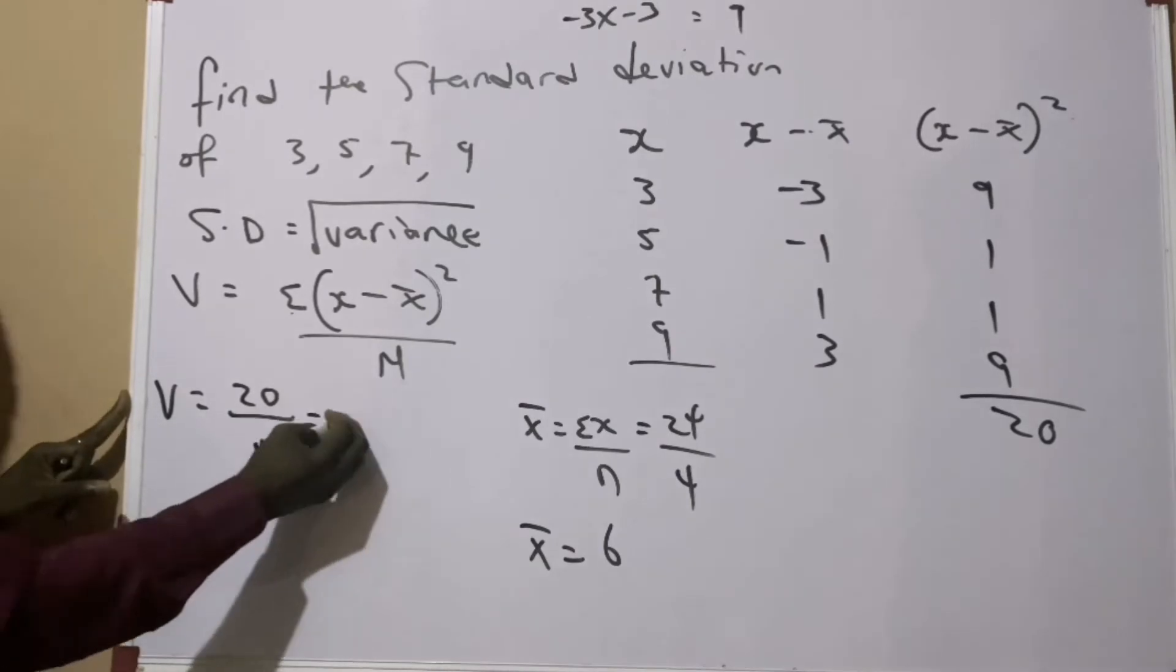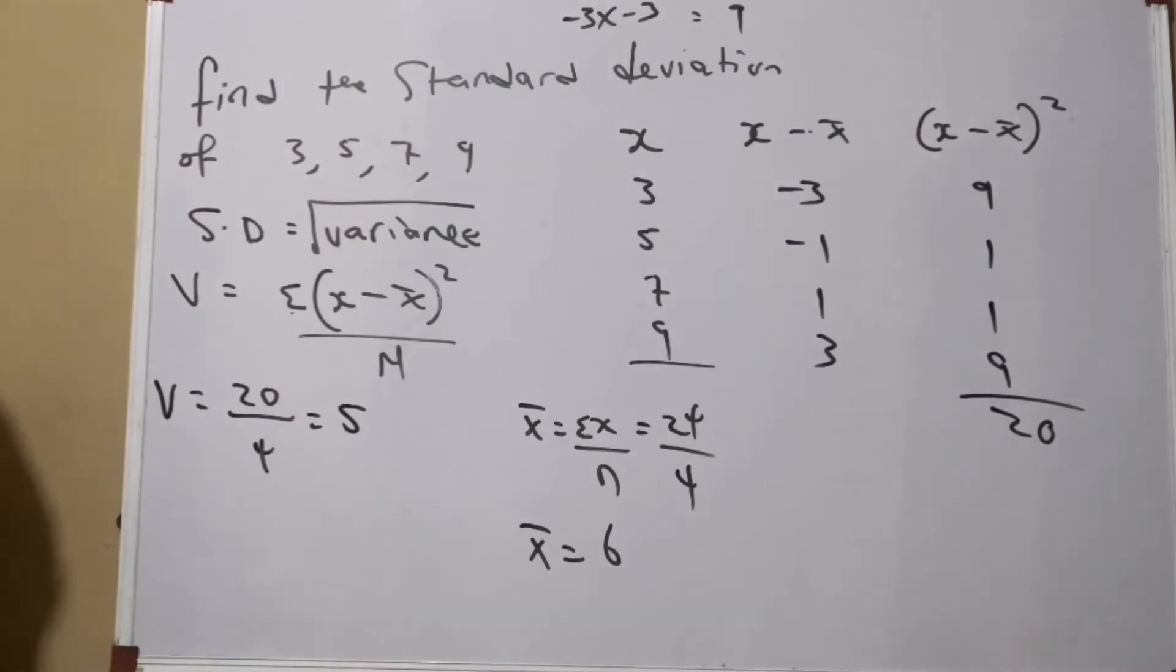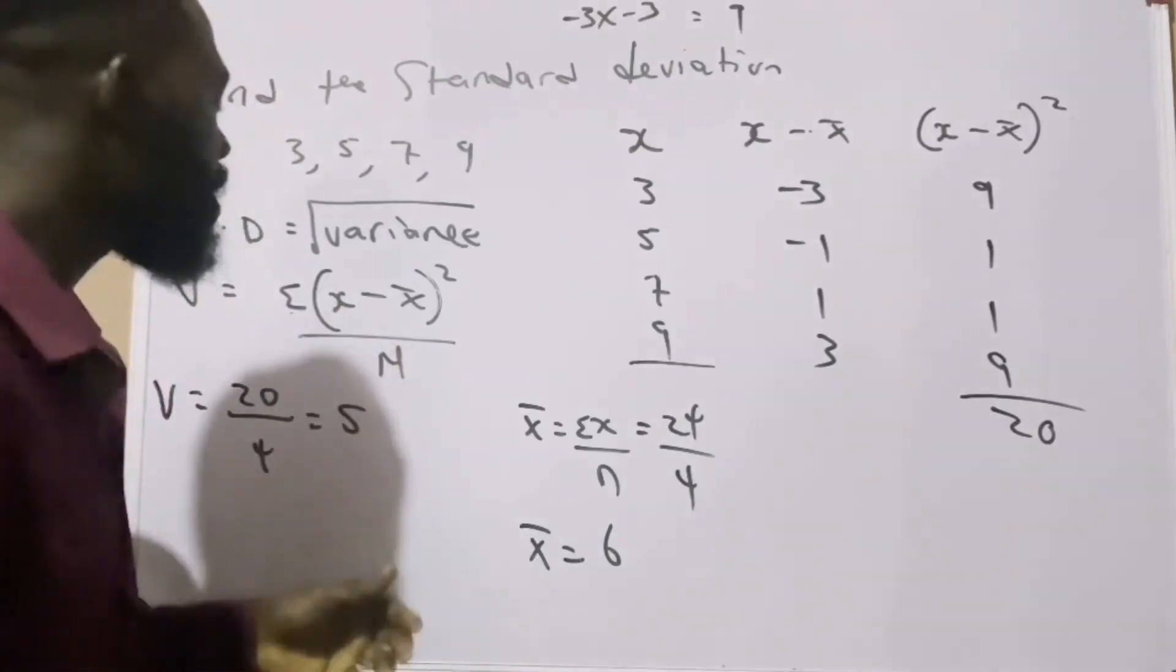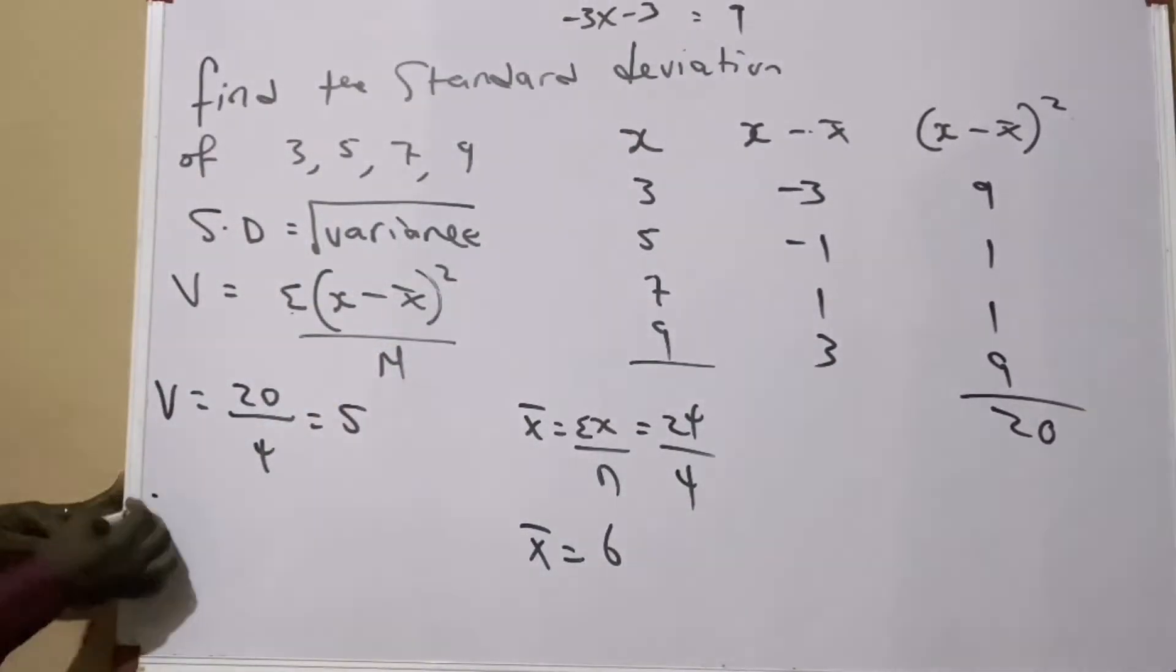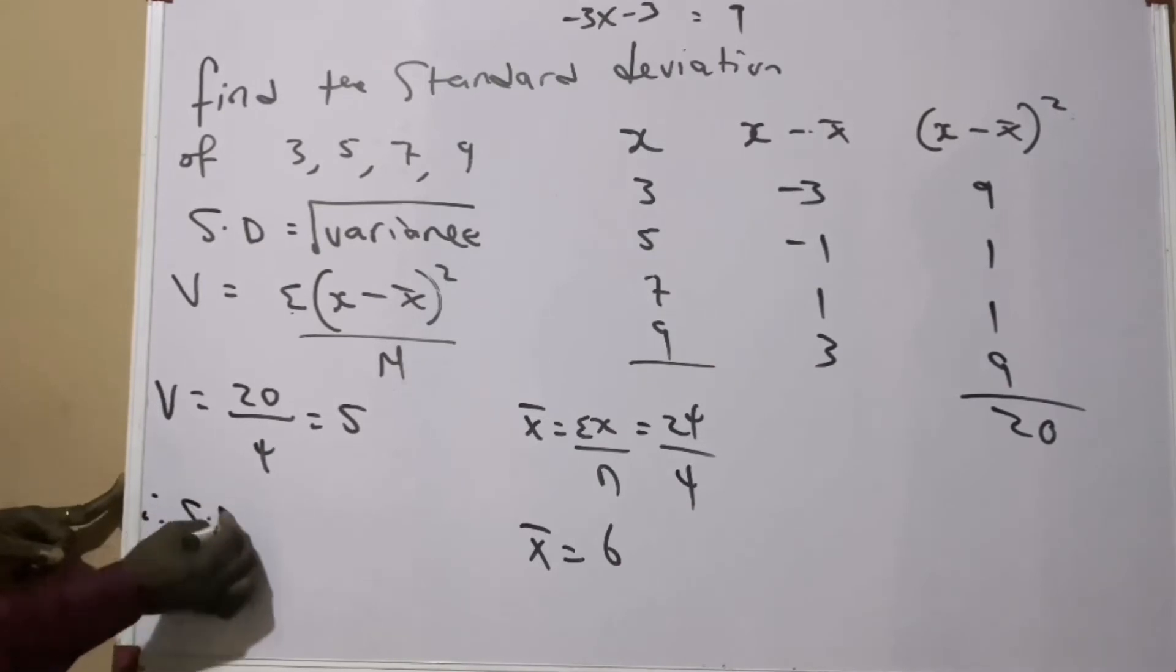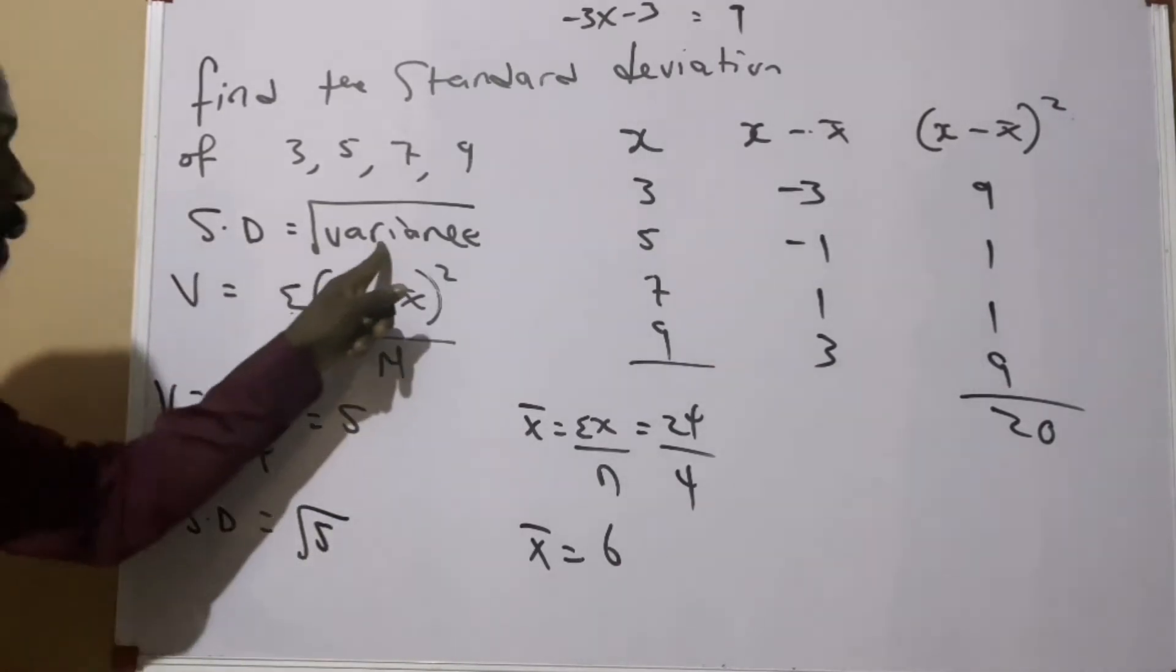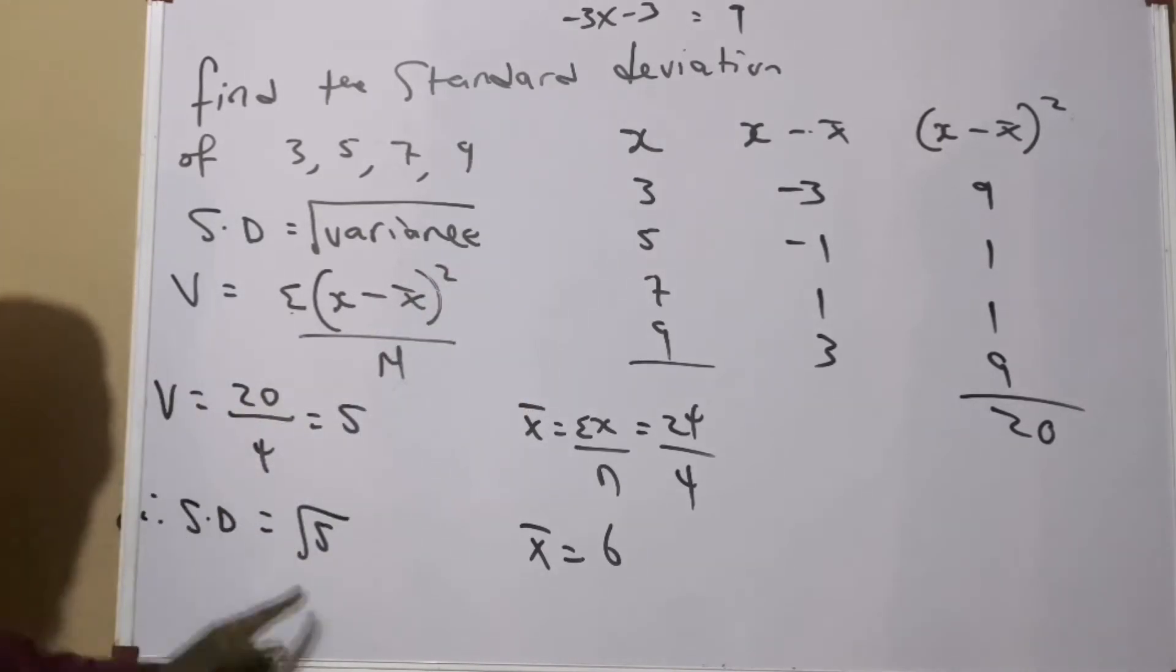So 20 divided by 4 gives us 5. Now this is not our answer because that answer is for variance. The question says find the standard deviation. Therefore, our standard deviation becomes the square root of 5, according to the formula - the square root of variance, and variance is 5.